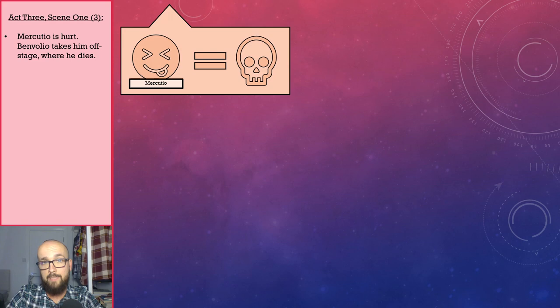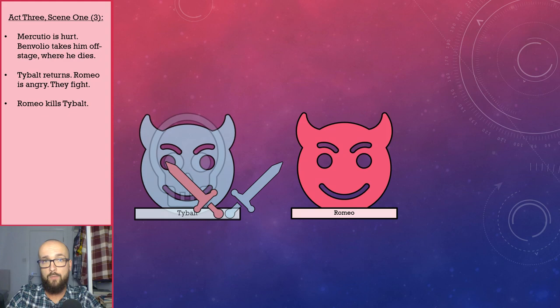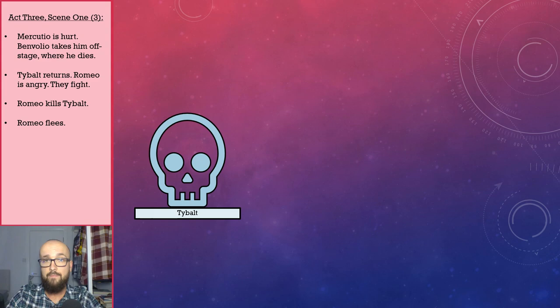Shortly afterwards, Tybalt returns. Now angry at the Capulet man, Romeo fights him. After a short scuffle, Romeo kills Tybalt and then, just like Tybalt before him, flees. A whole host of characters then turn up.